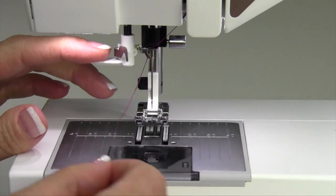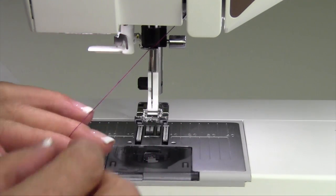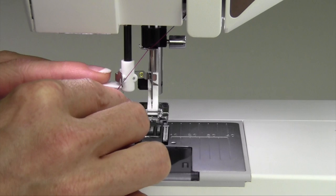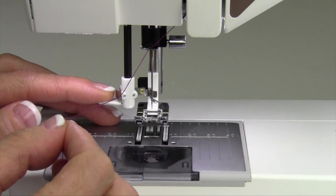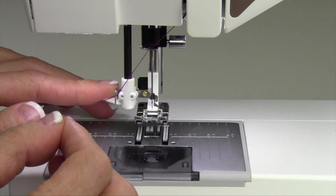The needle threader, as you can see, I'm going to pull it down with my finger. If I take my thread and catch it about halfway down, I wrap it around this little hook here, then bring it all the way down and rotate it to the eye of the needle.